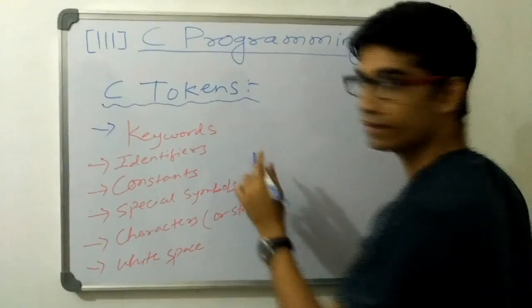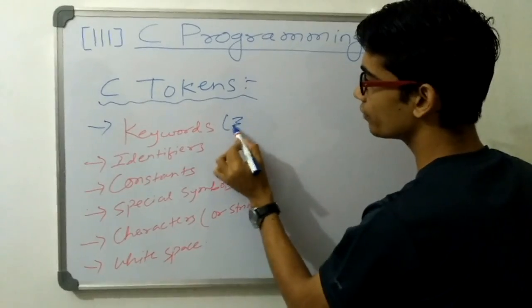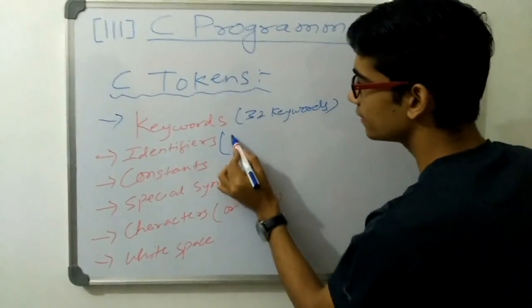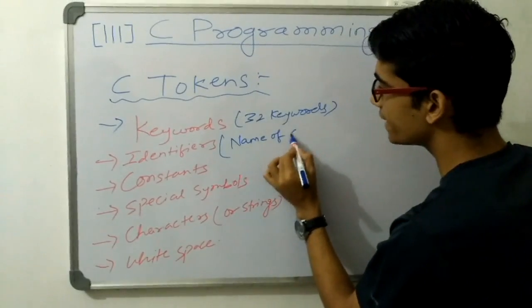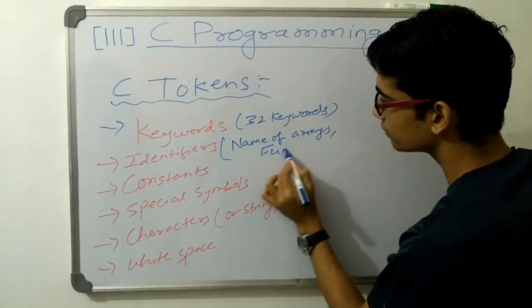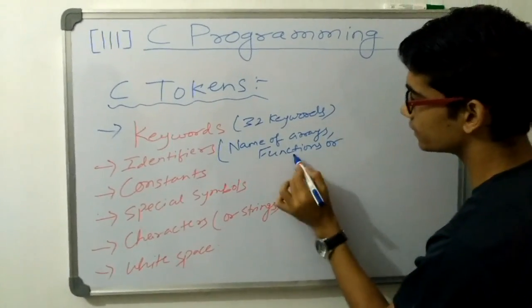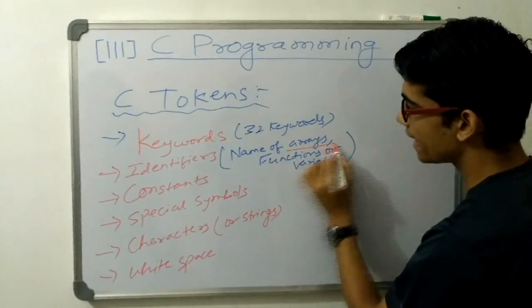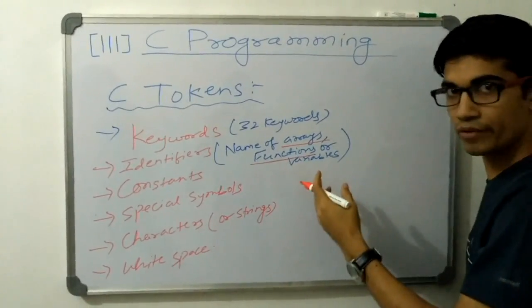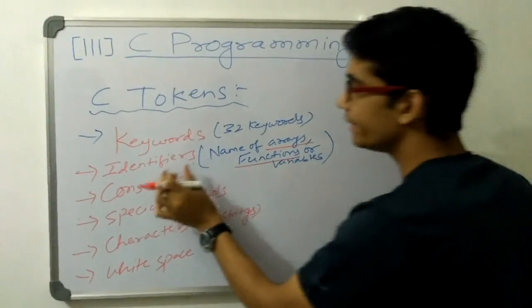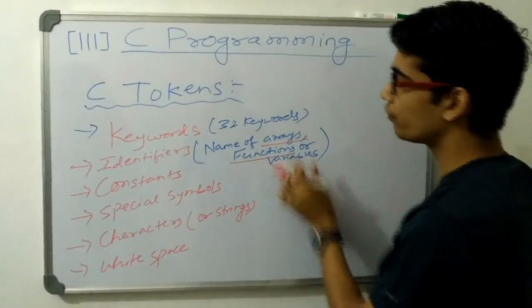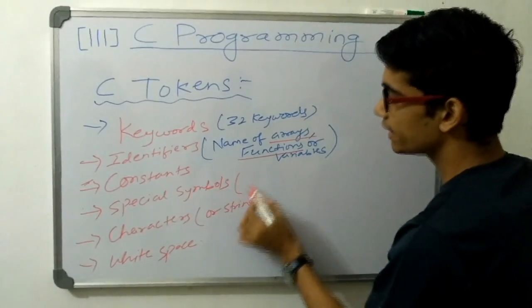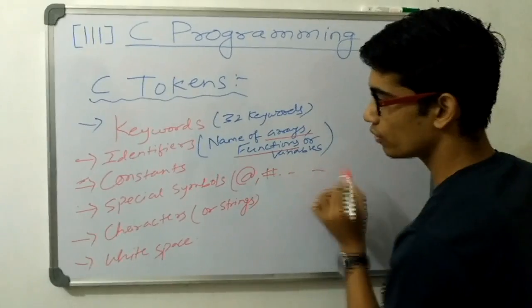Keywords are reserved keys in C. We have 32 keywords in C and they have a special meaning. Identifiers are names of arrays, functions, or variables. We will get the idea of arrays and functions in later video sections. Basically, identifiers are the names we give to functions, arrays, or variables.